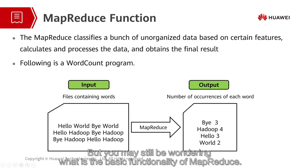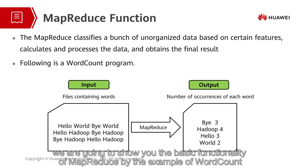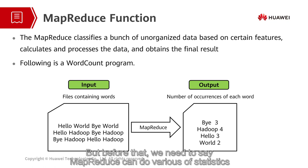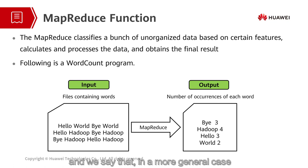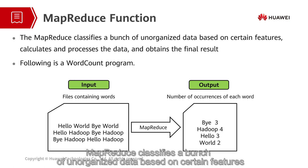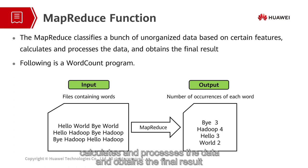You may still be wondering what is the basic functionality of MapReduce. In the following several pages, we are going to show you the basic functionality of MapReduce by the example of WordCount. But before that, we need to say MapReduce can do various kinds of statistics. In a more general case, MapReduce classifies a bunch of unorganized data based on certain features, calculates and processes the data, and obtains the final result.